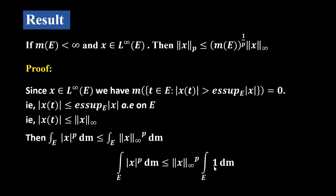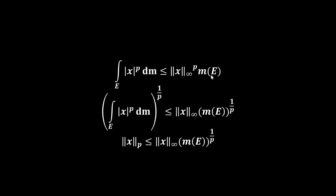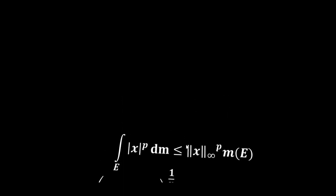Taking the 1/p-th power on both sides, we get (∫_E |x|^p dM)^(1/p) ≤ ‖x‖_∞ · M(E)^(1/p). Since (∫_E |x|^p dM)^(1/p) is ‖x‖_p by definition, we conclude ‖x‖_p ≤ ‖x‖_∞ · M(E)^(1/p). This is the result.